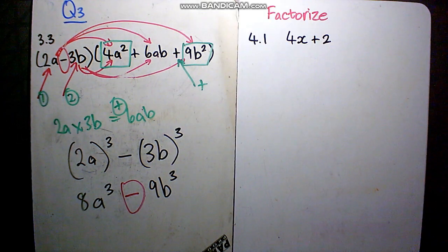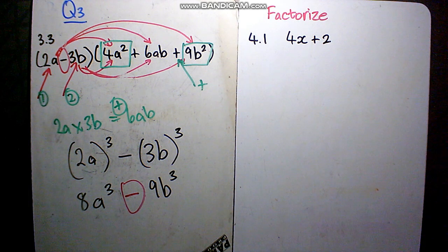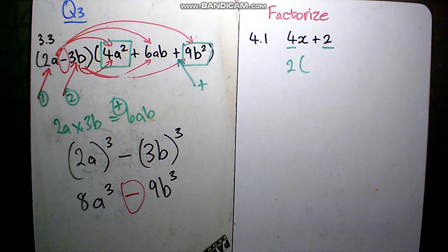Alright, this is our first one, 4.1. Write on the question. Pause, you try it out. Do you see a common factor? 2 being common. If I remove 2, what is left? I'll have 2x plus. Multiply: 2 times 2x, I get 4x. 2 times 1, I get 2. The answer is correct.